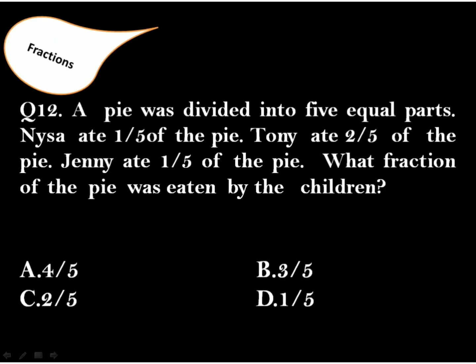Question 12: A pie was divided into 5 equal parts. Nisa ate 1 fifth of the pie, Tony ate 2 fifth of the pie, Jenny ate 1 fifth of the pie. What fraction of the pie was eaten by the children? The correct answer is option A. By adding all the fractions, it becomes 4 by 5.